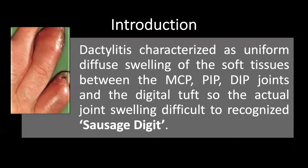Dactylitis is characterized by uniform, diffuse swelling usually affecting the whole digit structure and covering all the joints, including the MCP and interphalangeal joints. This swelling is so diffuse that you cannot palpate the actual individual joint swelling. From this diffuse swelling comes the name 'sausage digit.'